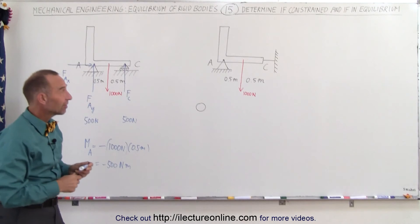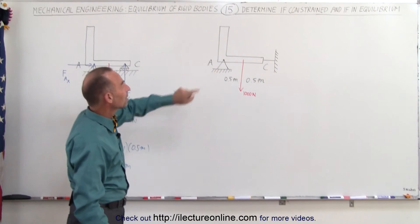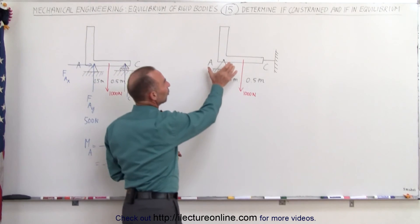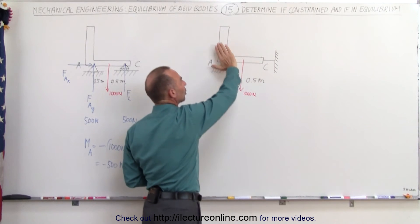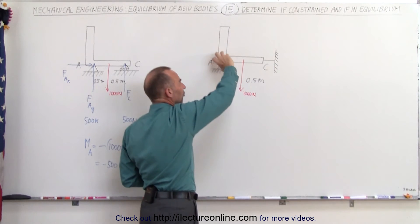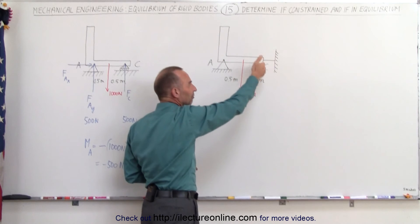Now when we come to this example, there's no problem at point A, but we do have a problem at point C. The weight hanging down would cause this bracket to rotate about point A, causing a moment about point A, but there's nothing at C to prevent it from